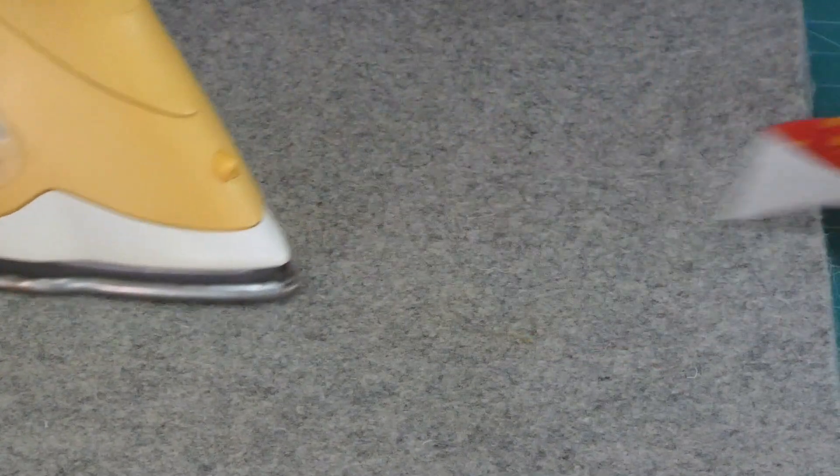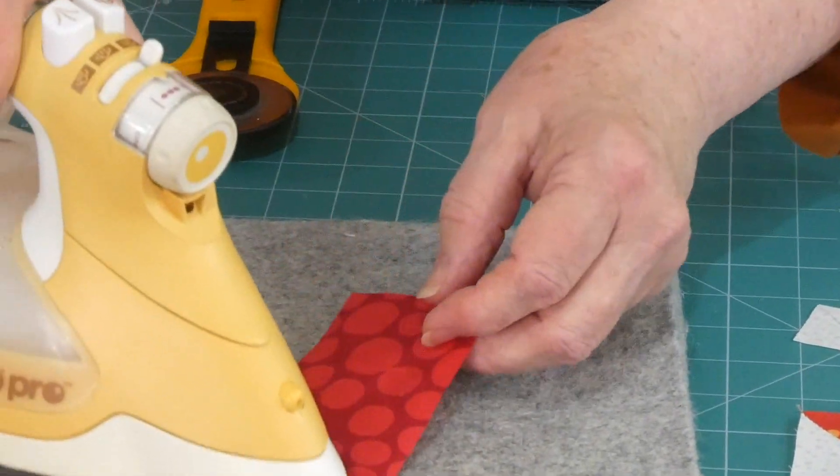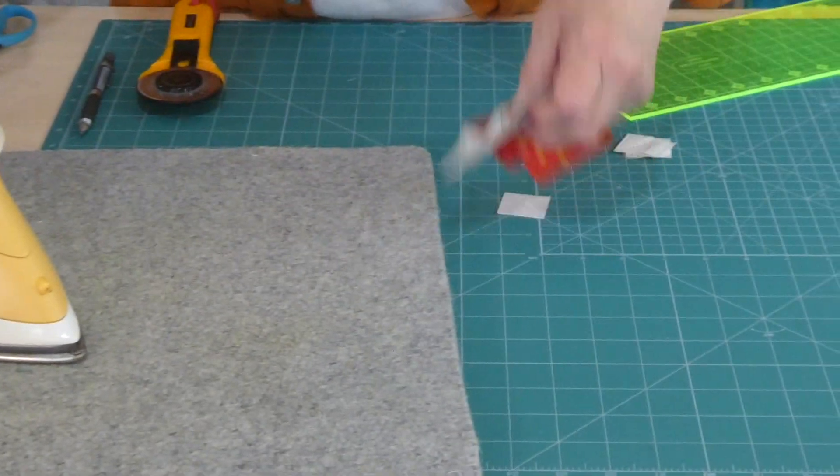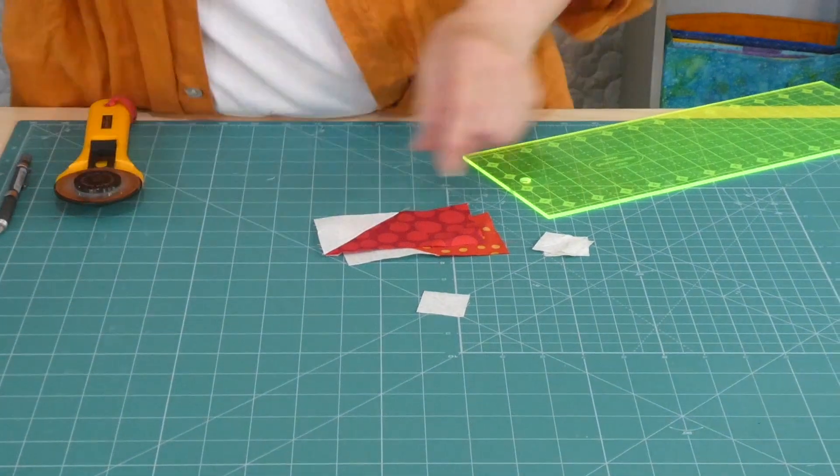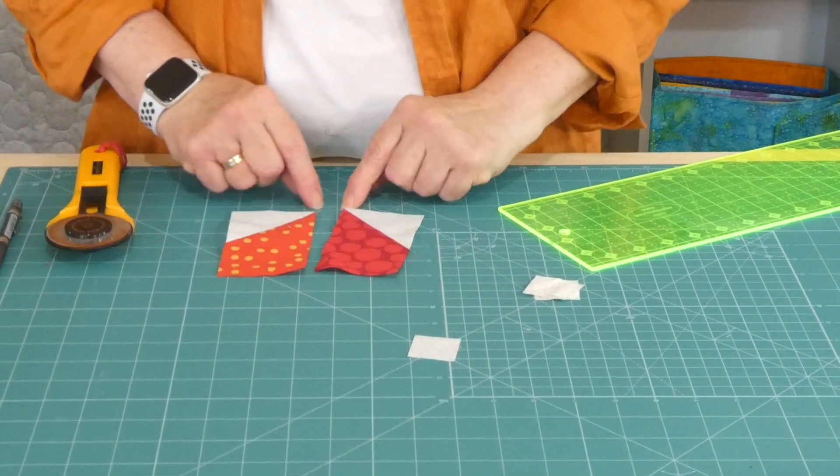So now I'm just going to press those seams towards the color. That's partly because I've got a white background and I didn't want the seam to be sitting out that way. But I just find if I know I'm going towards the color, it's just easy. I don't have to think too much. So now we've got the point of the heart down here.